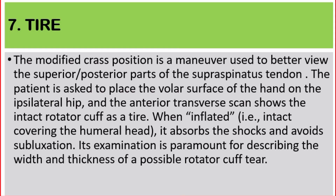Number seven: tire. The modified cross position is a maneuver used to better view the superior and posterior parts of the supraspinatus tendon. The patient is asked to place the volar surface of the hand on the ipsilateral hip, and the anterior transverse scan shows the intact rotator cuff as a tire — when inflated, meaning intact, it covers the humeral head, absorbs shocks, and avoids subluxation. Its examination is paramount for describing the width and thickness of a possible rotator cuff tear.